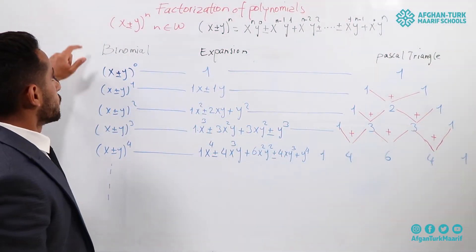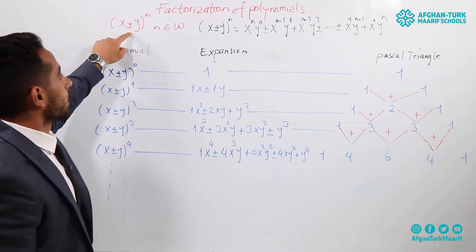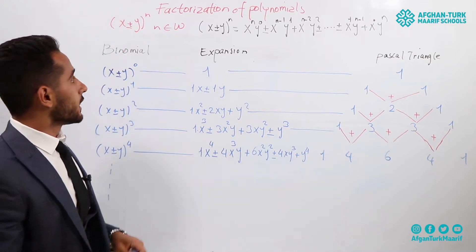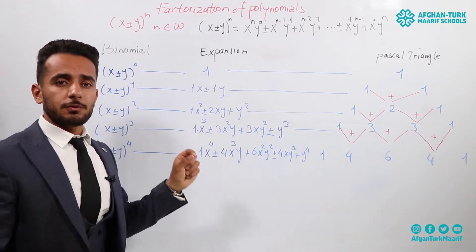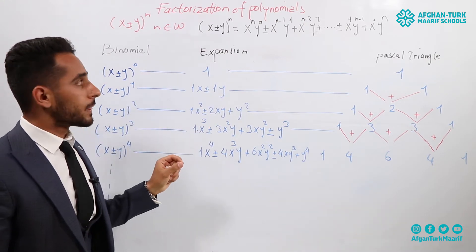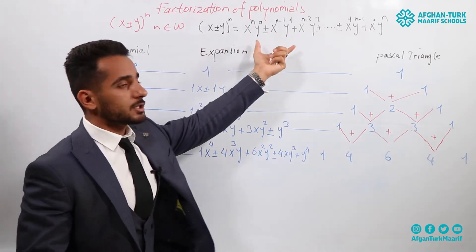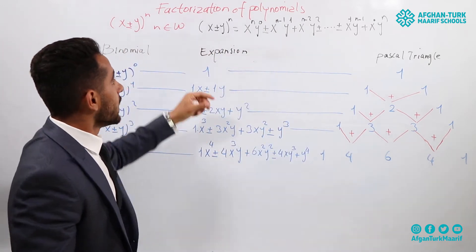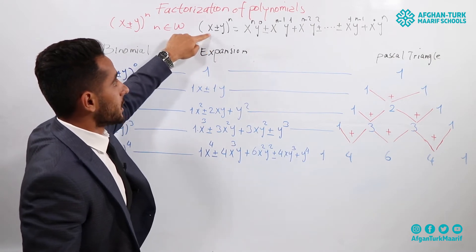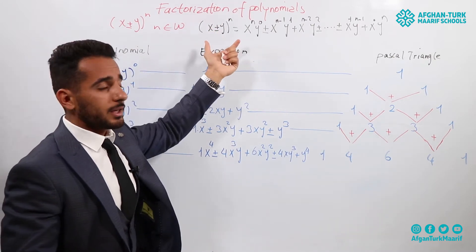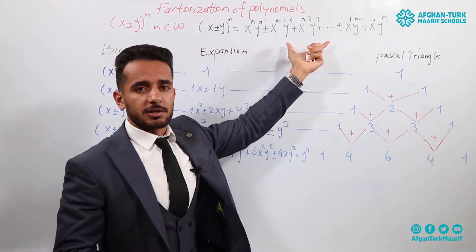One of the types of identities are x plus or minus y to the power of n, and n must be an element of whole numbers, meaning it starts from zero. In order to expand this identity, we use this formula. If it is positive, meaning x plus y to the power of n, all the terms should be positive.